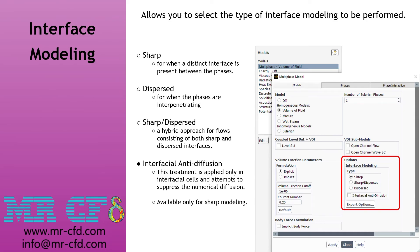The last option shown in the VOF window is the interface modeling option. There are three options available: sharp, dispersed, and sharp or dispersed. When using the sharp option, a distinct interface must be present between the phases. The dispersed option requires that the phases are interpenetrating. The sharp or dispersed option is a hybrid approach for flows consisting of both sharp and dispersed interfaces, and can also be used to capture mildly sharp interfaces — those that are neither as sharp as the sharp option nor as diffused as the dispersed option.